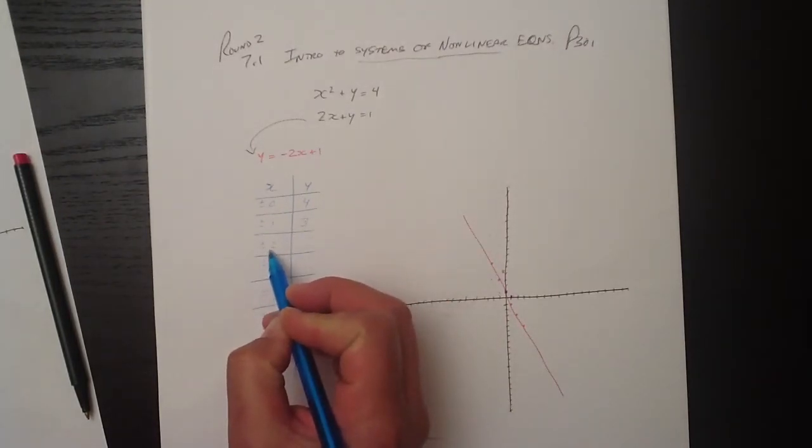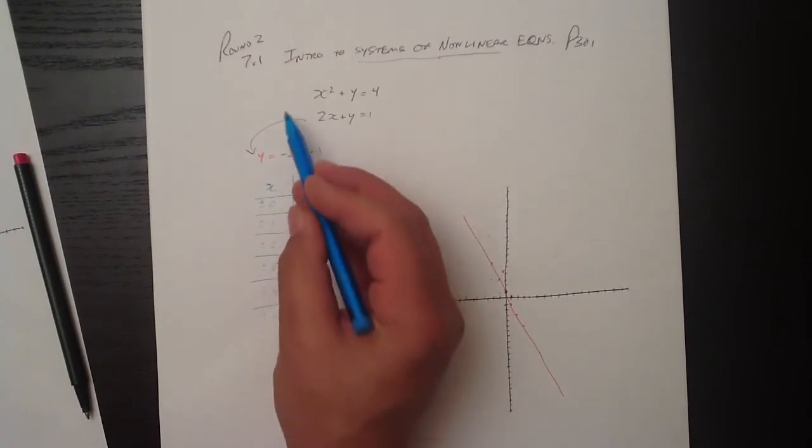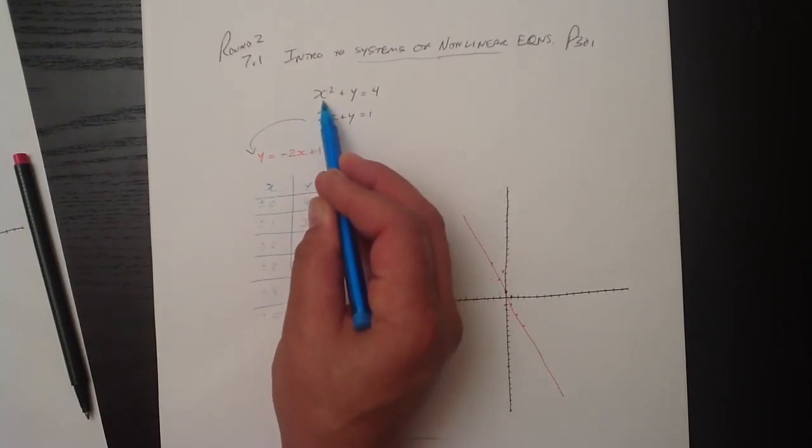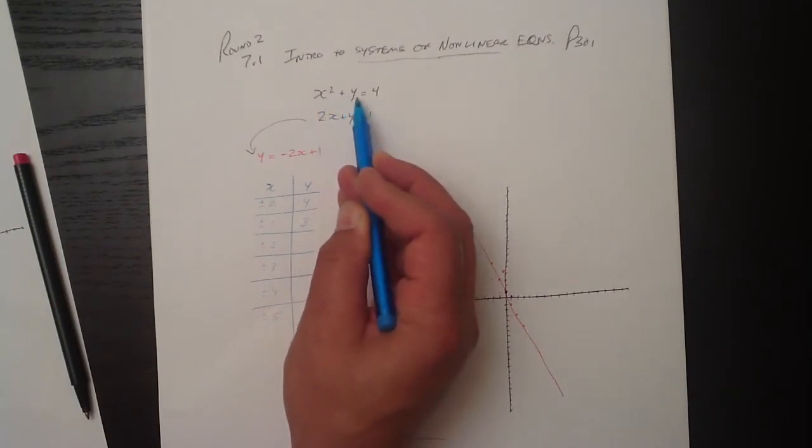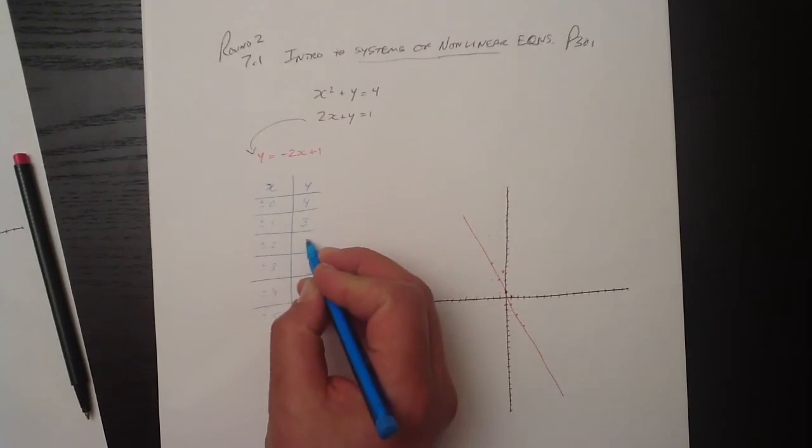If x was 2 or minus 2, then x squared would be 4. So 2 squared is 4. Minus 2 squared is 4. So 4 plus 0 is 4. So we've got a 0 here.